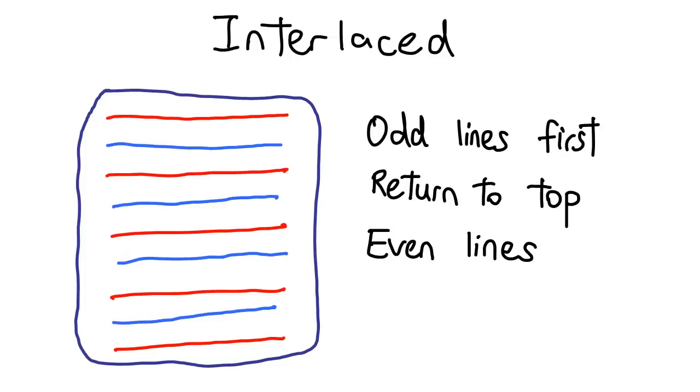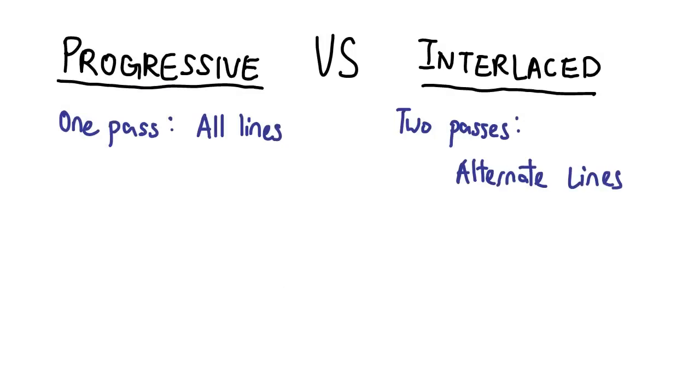Since there is an equal number of lines to be scanned, the time taken to complete one full interlaced pass is roughly equivalent to the time it takes for a progressive one—that is, a scanning pass that takes all the lines from top to bottom.